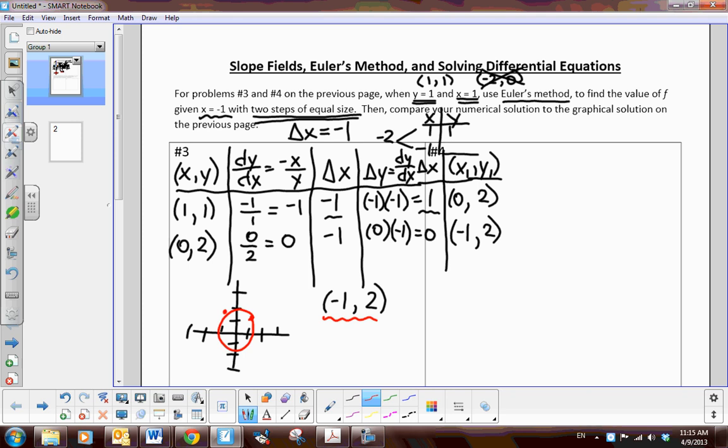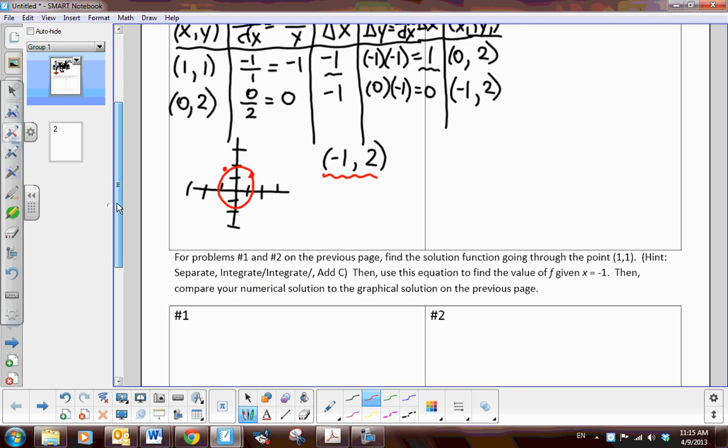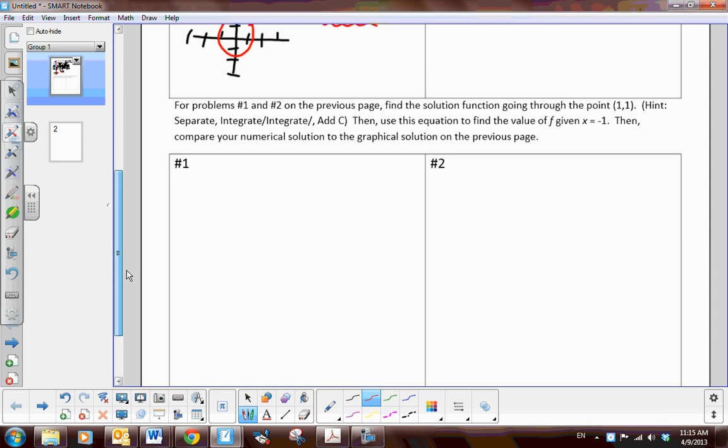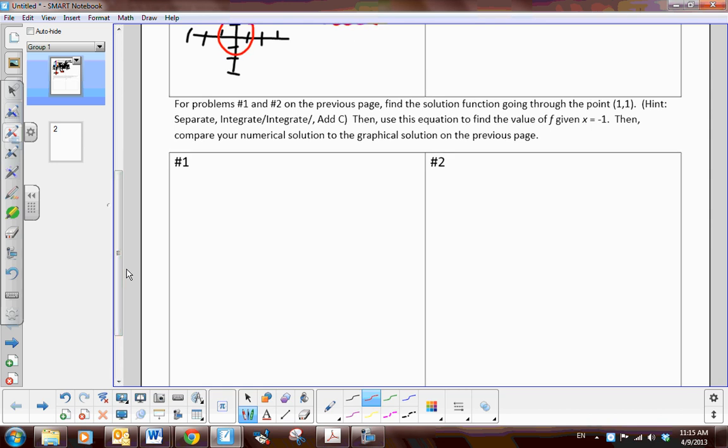Now you do number four in the same method in that you're going to start with the point one, one and do your change in x in two steps and predict what the new point would be for x is negative one. Now if I scroll down a little bit, I'm also going to do this problem with you because this math actually gets quite complex.